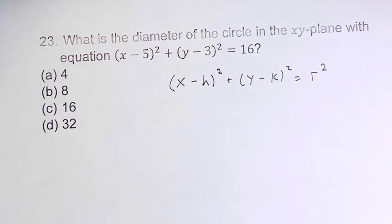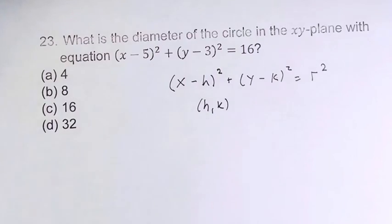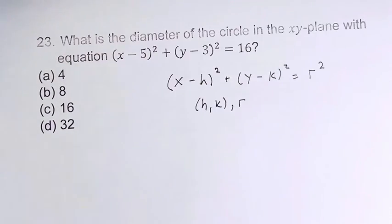What do these variables actually represent? h, k is the center of the circle and r is the radius.